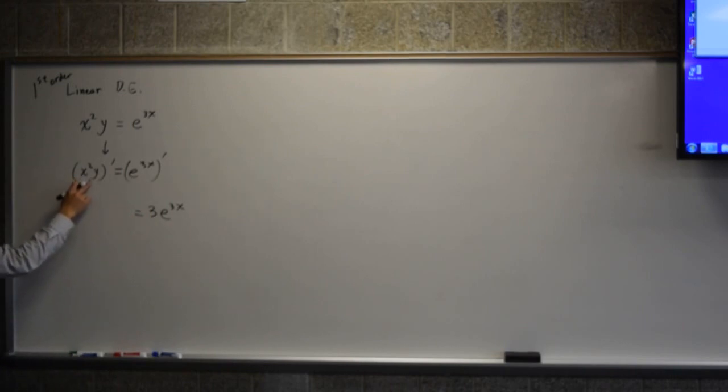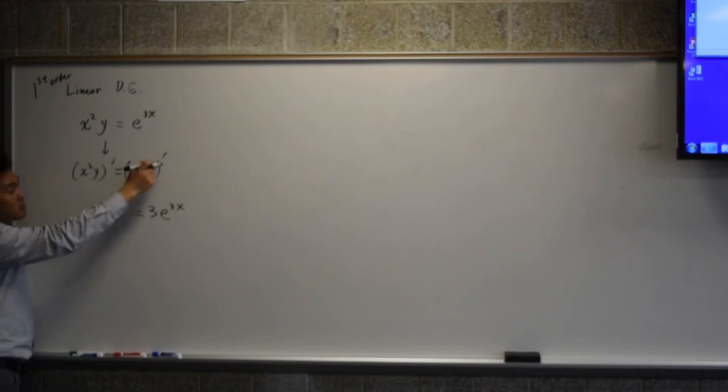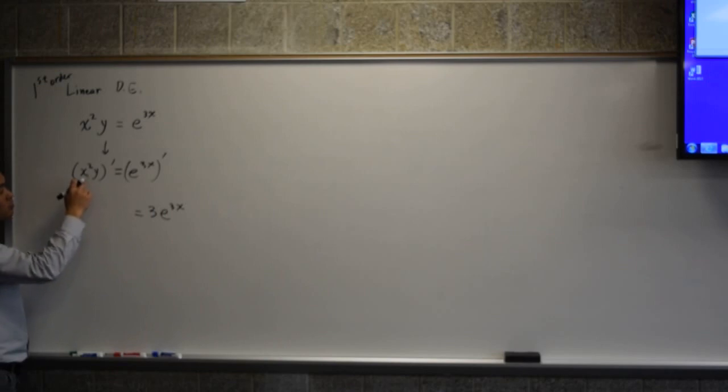Now how do you differentiate this? What rule should you use? Product rule. Because y is considered as a function of x. So we have the product rule here, which is you differentiate the first one times the second. And then the next stage you differentiate the second one and leaving the first one.